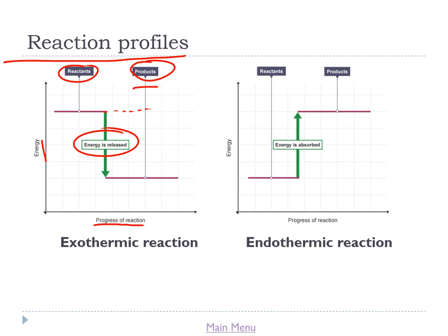Conversely, with an endothermic reaction, the reactants have a small amount of energy and the products have a larger amount of energy. In order to get that extra energy, the reactants have to absorb a load of energy. This energy comes from the surroundings, and that's why the surroundings cool down — their energy has been taken and transferred into the chemical energy of the products in a form that we can't easily measure.